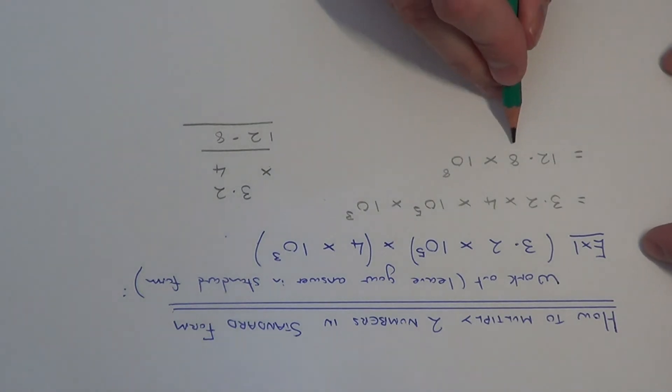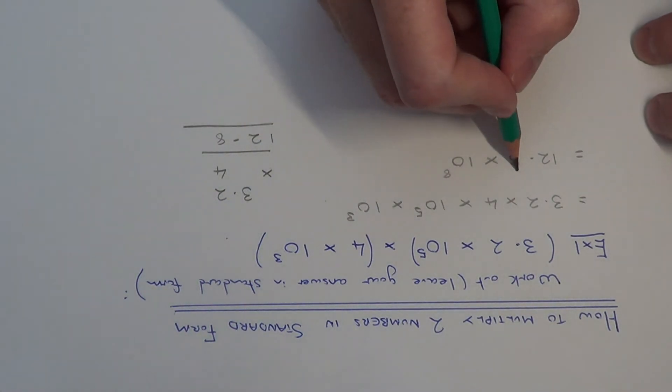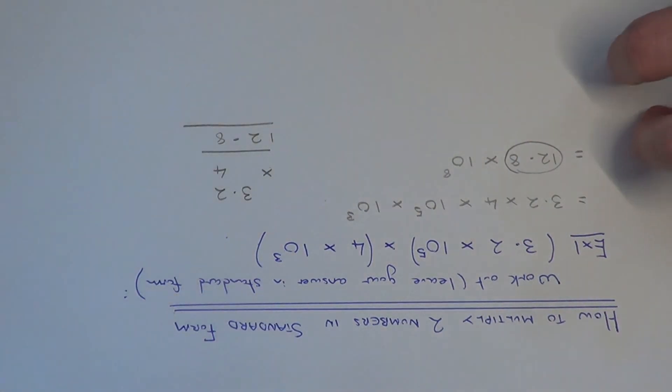Now you might think that is your final answer now. But if you remember a number in standard index form the first number has to be between 1 and 10. 12.8 is not a number between 1 and 10.